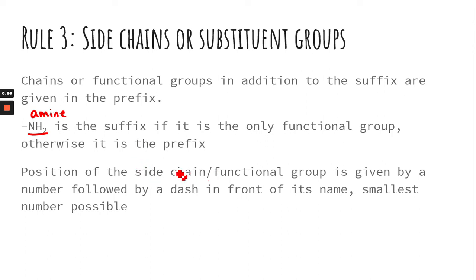The position of the side chain and functional group is given by the number followed by the dash. Remember, the functional group that we name in rule two should be on the lowest carbon. If there's not a functional group, if it's just an alkane, then you would want to have the side chain on the smallest.